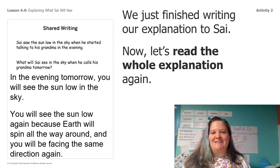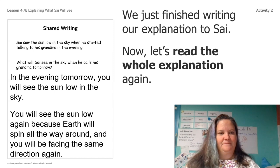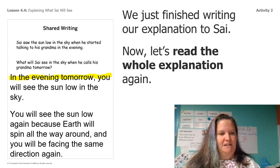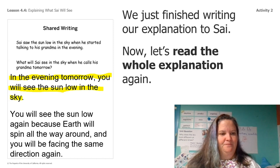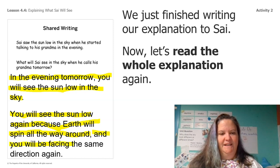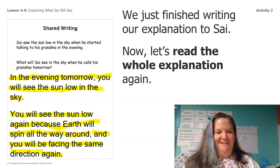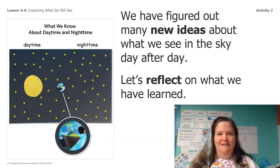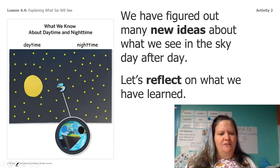We just finished writing our explanations to Sai. Now let's read the whole explanation again. In the evening tomorrow, you will see the sun low in the sky. You will see the sun low again because earth will spin all the way around and you will be facing the same direction again. Nice work! You guys, we've figured out so many new ideas about what we see in the sky day after day. Let's reflect really quickly on what we've learned.